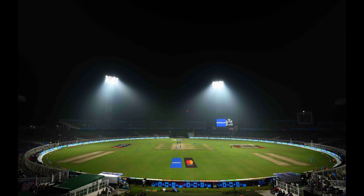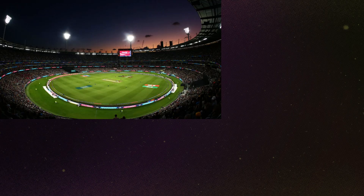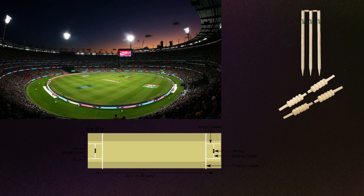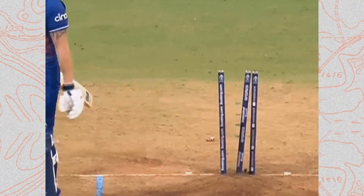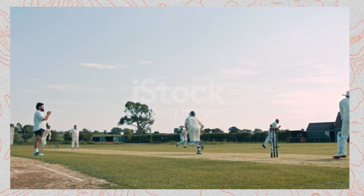Let's talk about the cricket pitch. It's not just a green field — it's a strategic battleground. The pitch has three main components: the stumps, bails, and creases. The bowler aims to dismiss the batsman by hitting the stumps, while the batsman defends their wicket and tries to score runs.